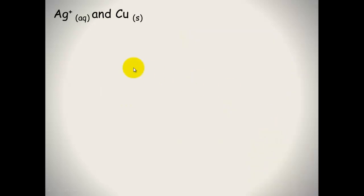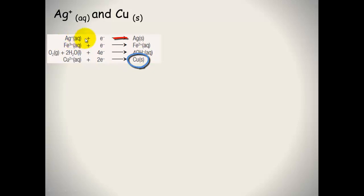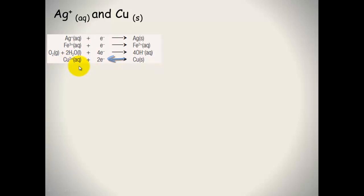Let's look at another example: silver ions and copper solid. I've cut out that part of the electrochemical series. Remember the top equation — once we've found the species, there are silver ions and there is copper solid. The top equation needs to go in the forward direction, so silver ions form silver solid. The bottom has to go in a backwards direction, and we've got copper solid — so that's okay.